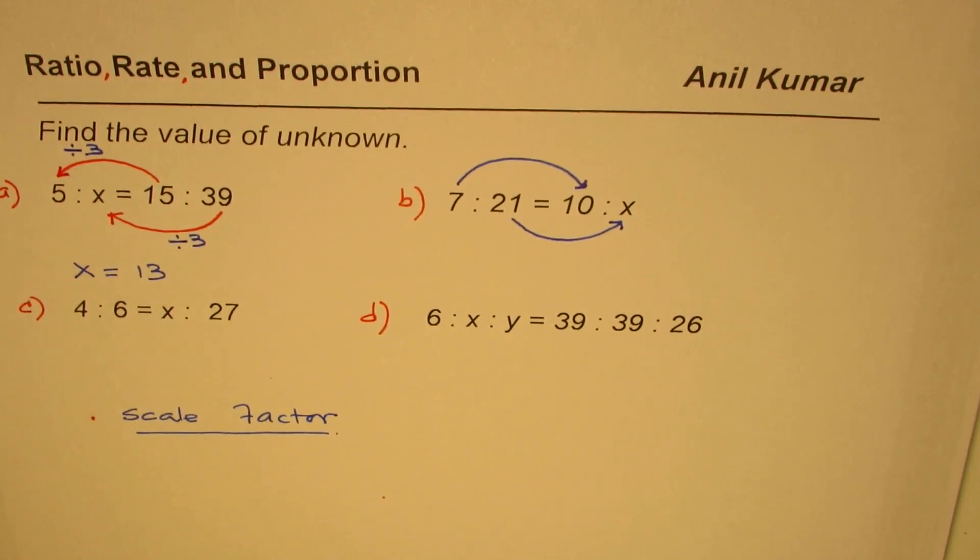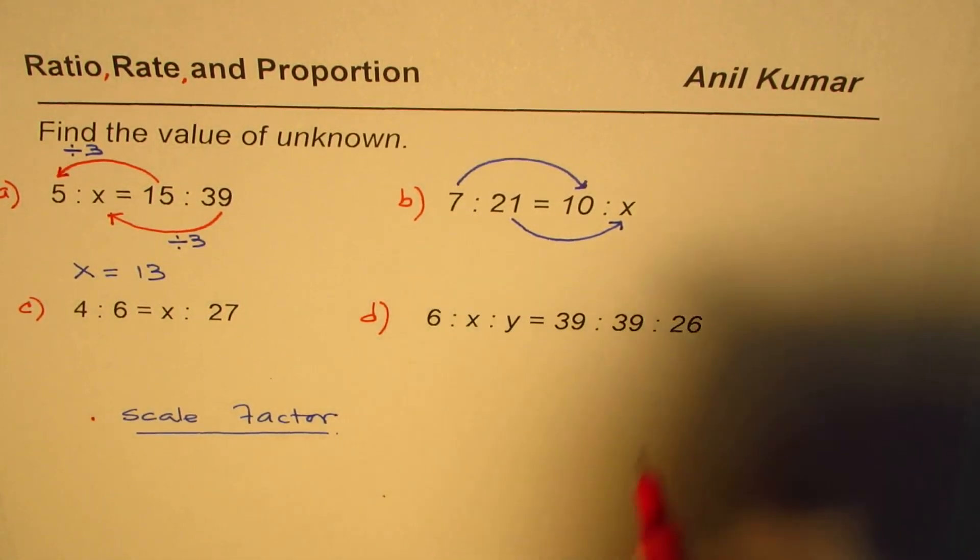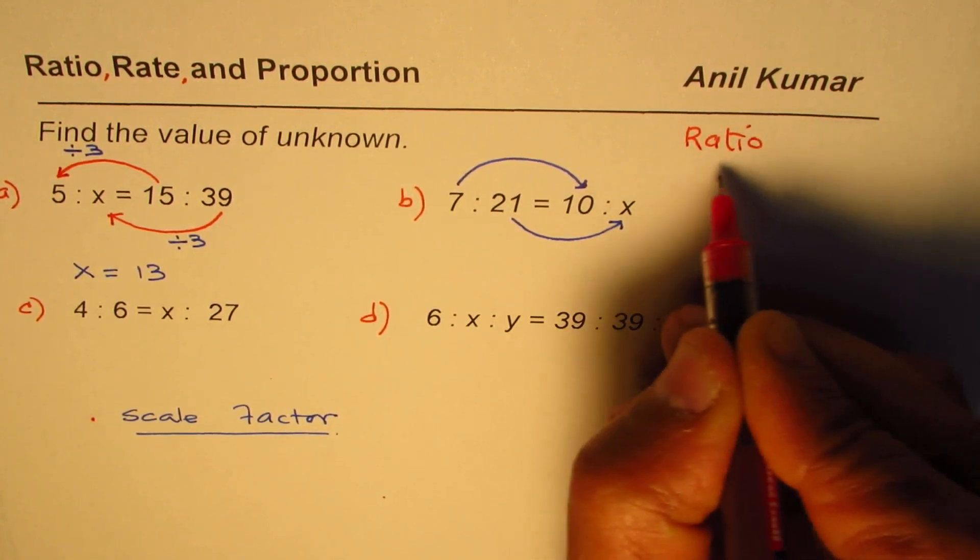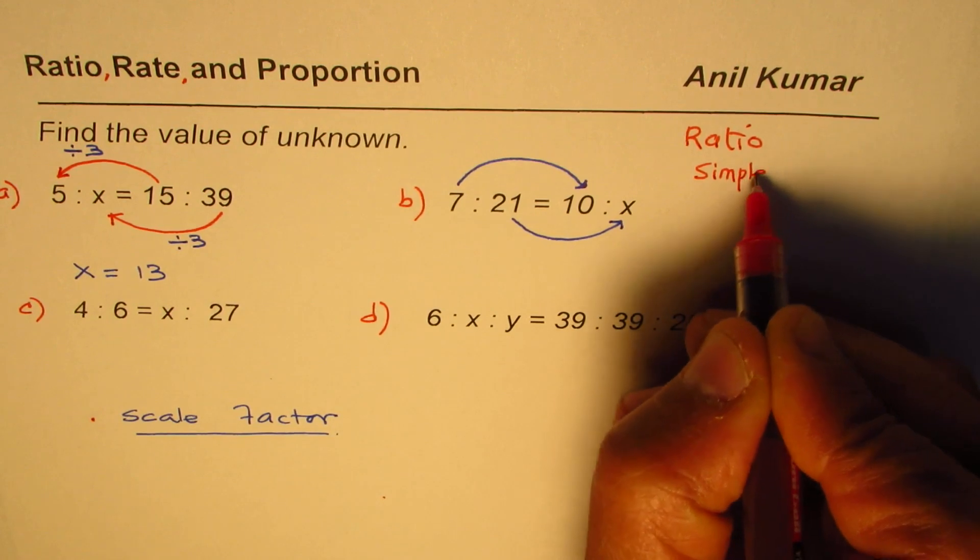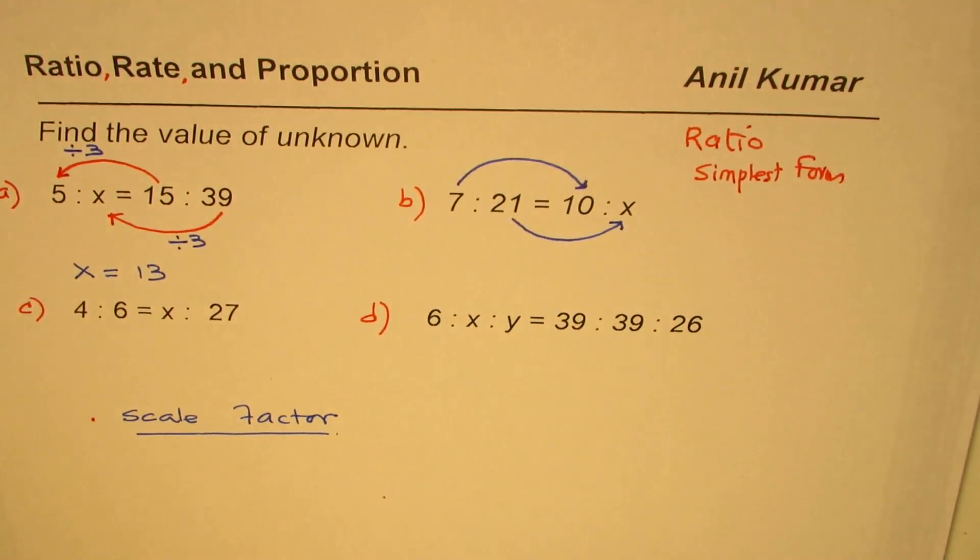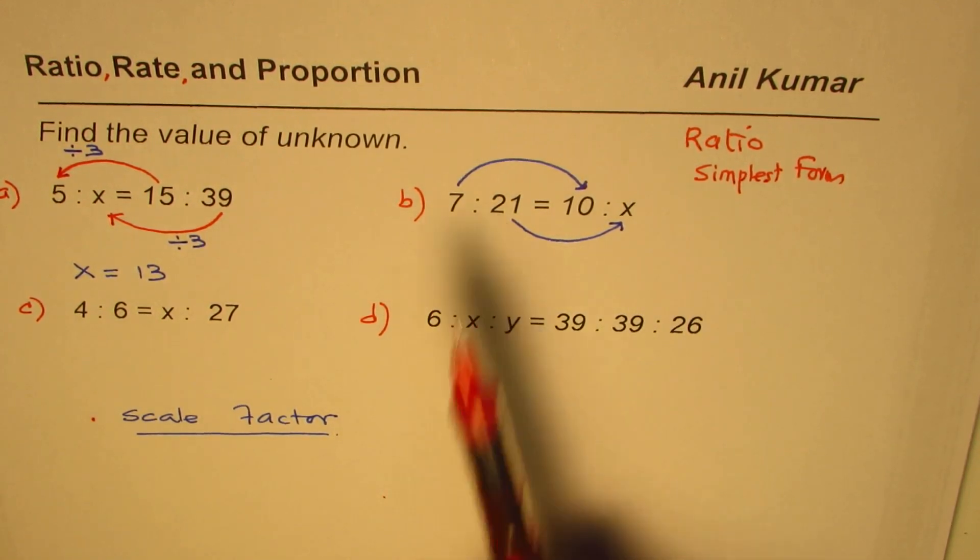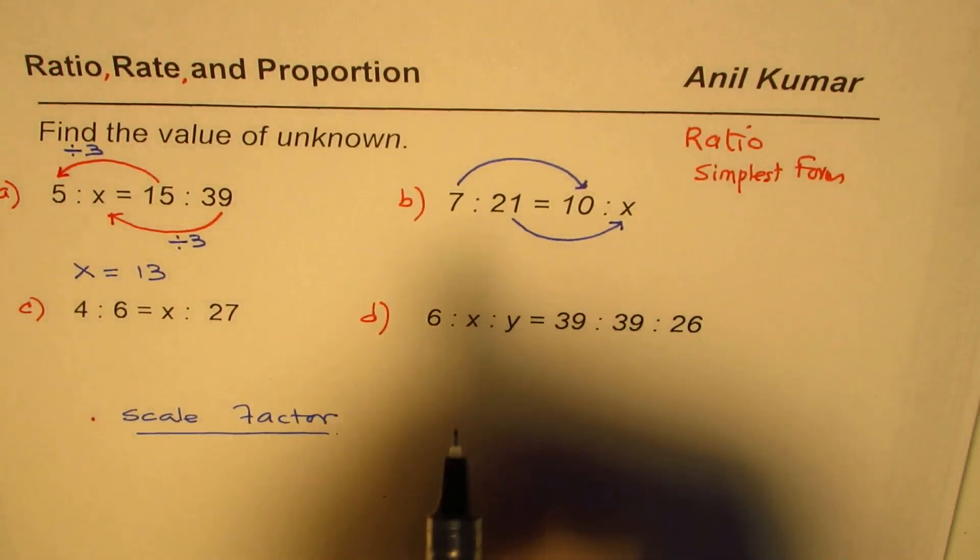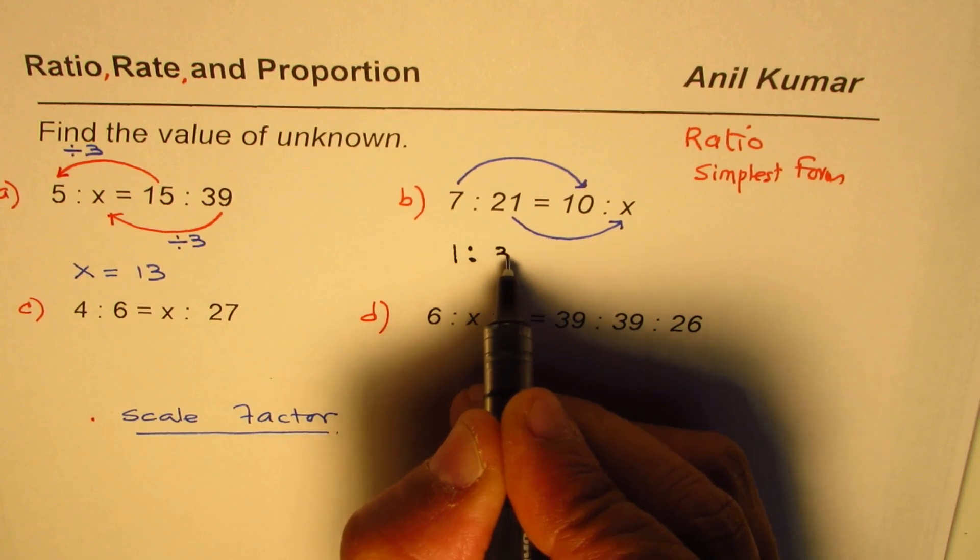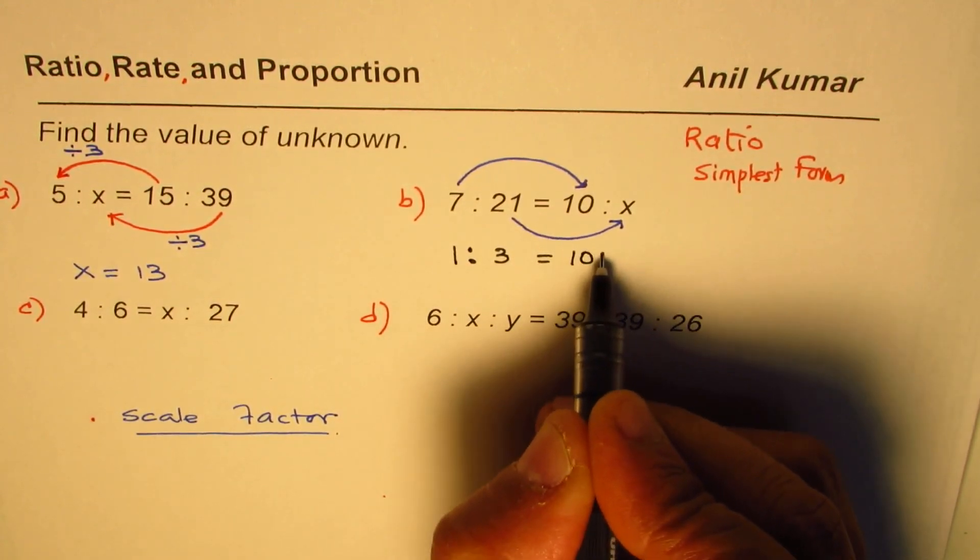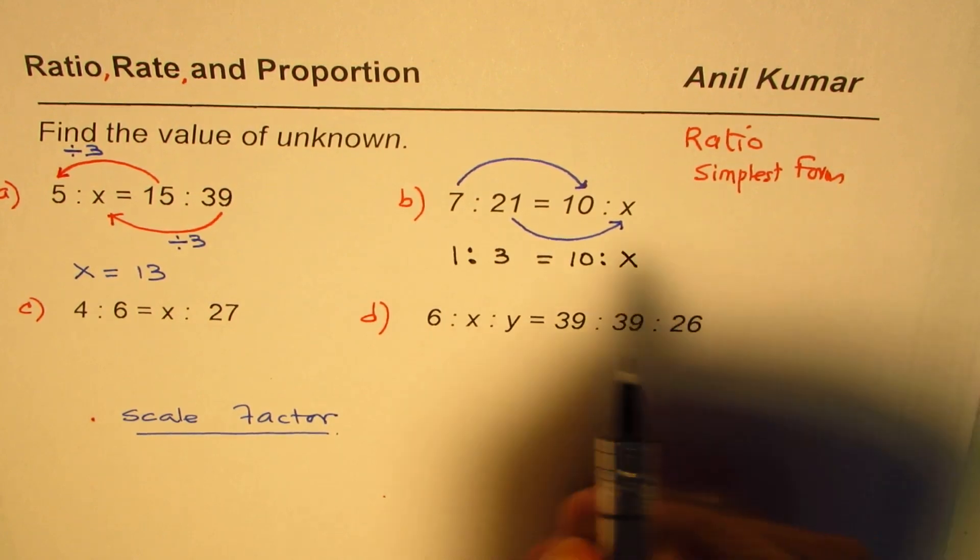What should I do now? Well, sometimes what we do is we simplify our ratio. So we write ratio in simplest form and then do all this. Can we do it? Yes. 7 is to 21, we could divide both by 7, so we get 1 is to 3.